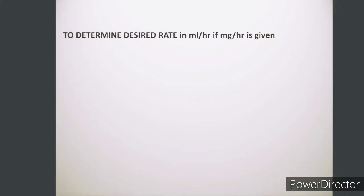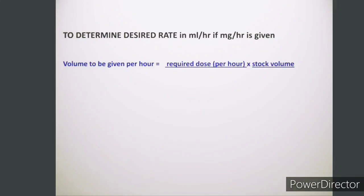First, we will see how to determine the desired rate in ml per hour if the mg per hour dose is already given. For this, we can use this formula. If we have already got a prescription in mg per hour, then we have to set the rate in ml per hour. The formula will be: required dose per hour in mg per hour — as mentioned by the doctor — multiplied by the stock volume.